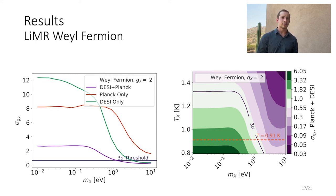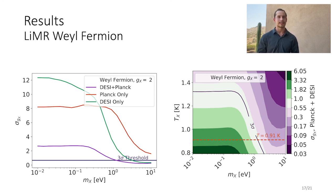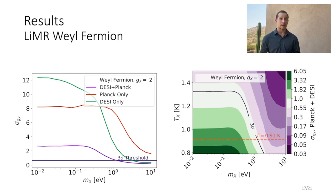In the left plot, we show the result of our forecast for a Weyl fermion at the minimum allowed temperature using Planck-only data, DESI-only data, and the combined dataset. Where the lines drop below 3-sigma, we are able to constrain the relics in that parameter space to at least 3-sigma significance. In the right-hand plot, we only consider the combined dataset but show how the constraint changes as we consider different values of the relic temperature. As expected, we can constrain to lower masses the hotter our relic is.